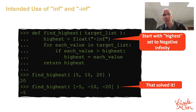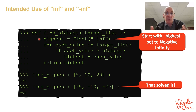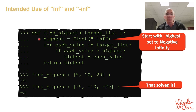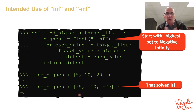Here's an example of the intended use of negative infinity. Going back to the earlier find_highest program: the problem was I initially set highest to zero, so if the target list had no values higher than zero the function returned zero incorrectly. Now I can set highest initially to negative infinity, which means it doesn't matter what's in the list — at least one value will be higher than negative infinity. This solves the problem where passing a list of all negative numbers caused the function to fail.